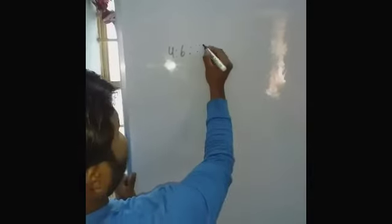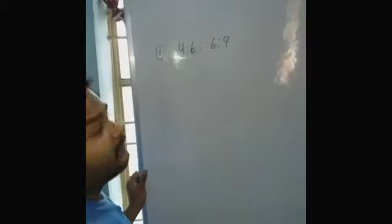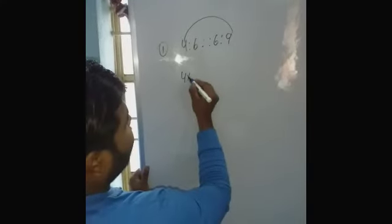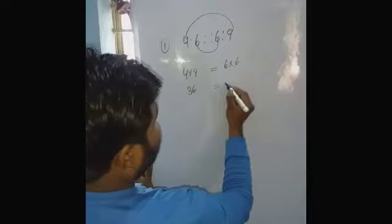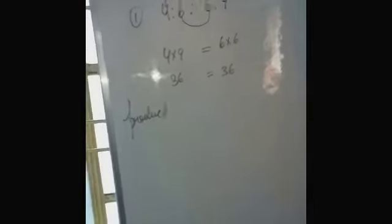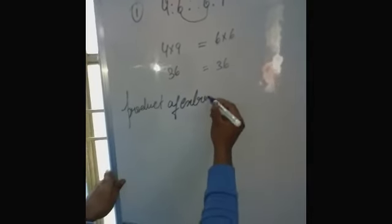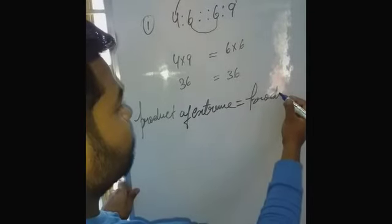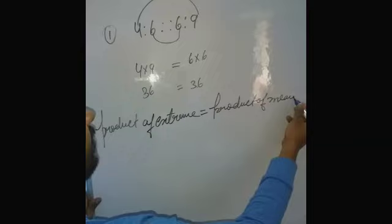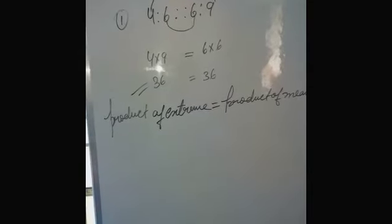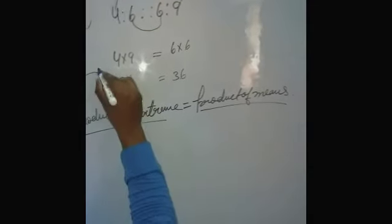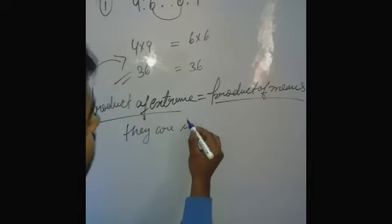Let us take an example to prove that these terms are in proportion. The product of extreme terms: 4 into 9 is equal to the product of means, 6 into 6. 36 is equal to 36. The product of extremes is equal to the product of means, so they are in proportion.